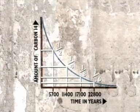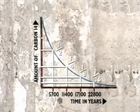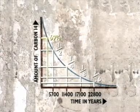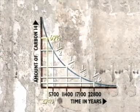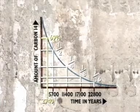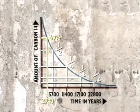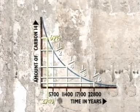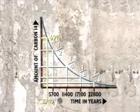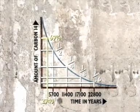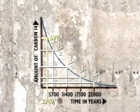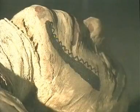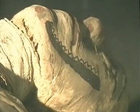The computer has calculated that there is only 69% of the original radioactive carbon-14 left in the mummy. That corresponds with the yellow line on the graph, which gives us the time of burial as 2,940 years ago.